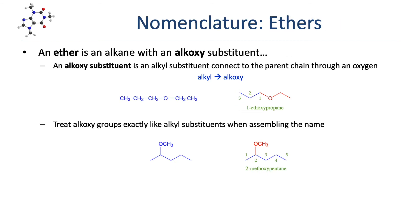Next, we're going to look at ethers. An ether is really an alkane that has an alkoxy substituent. An alkoxy substituent is like an alkyl substituent, except it's bonded through an oxygen to the parent chain. Alkoxy groups are named as though they were alkyl groups, but with the ending changed from -yl to -oxy. So methyl becomes methoxy. Another way to think of ethers is as an oxygen bonded to two alkyl groups.